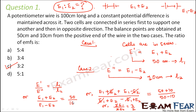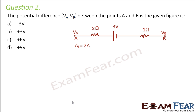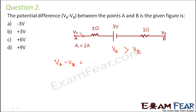Question number two: find the potential difference Va minus Vb between points A and B in the given figure. Looking at the circuit, a current of 2 amperes is flowing from point A. Since current flows from A to B, the potential at A is greater than at B — that is why the current flows. We need to find how much greater.